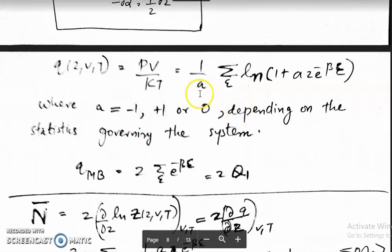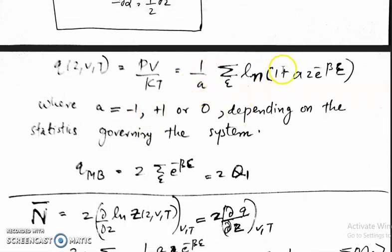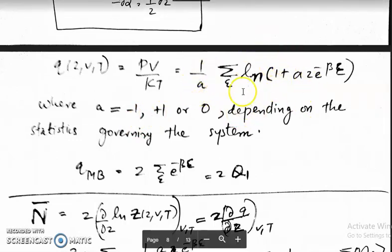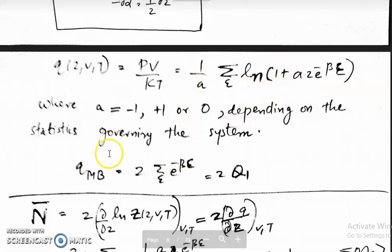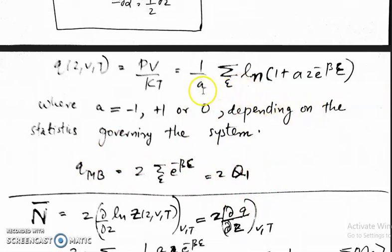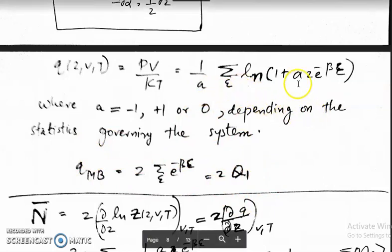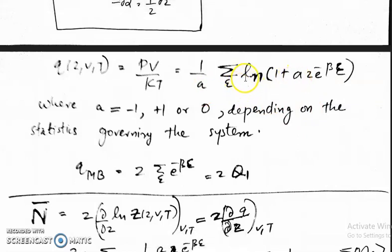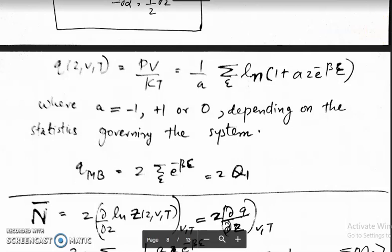If we generalize and put a = 0, we will get the Maxwell-Boltzmann case — that is z·q₁. When you put a = 0, you will have log(1) in the numerator, giving 0 in the numerator, and 0 in the denominator as well — a 0/0 indeterminate form.